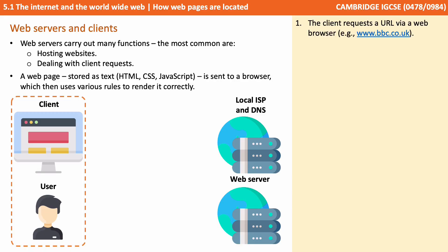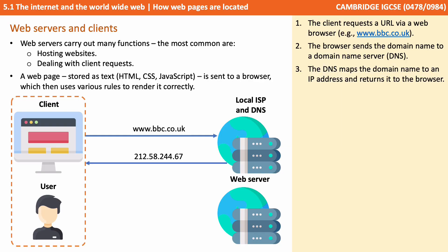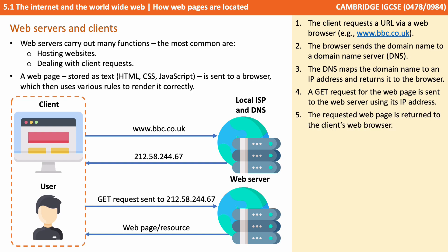Let's step through that process. First, the client requests a URL via a web browser — in this case www.bbc.co.uk. The browser sends the domain name to a domain name server. The domain name server maps the domain name to an IP address and returns it to the browser. A GET request for the web page is then sent to the web server using that IP address, and the requested web page is returned to the client's web browser.